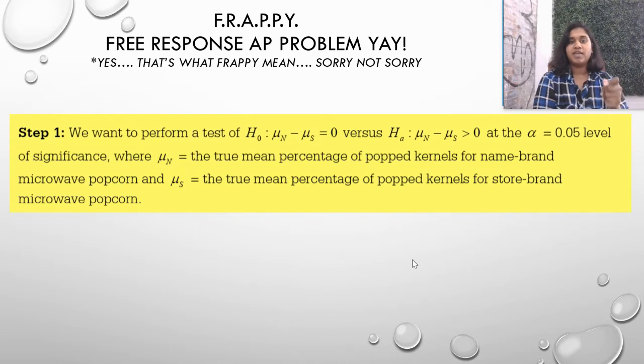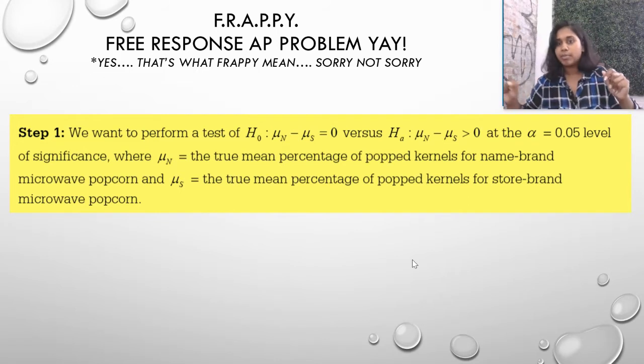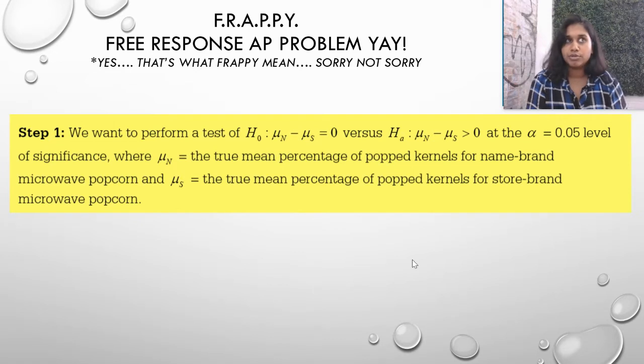And, of course, I talk about what mu of N and mu of S mean. They gave a really beautiful sentence. You could have just put mu of N equals, you know, like in shorthand, percent popped kernel name brand, percent popped kernel store brand, or something. You can absolutely shorthand or create shorter mid-sentences or like little half sentences. Just make sure you are labeling that information. It is important information to know.